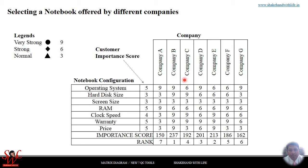In the same way, we calculate the importance score for every notebook offered by each company. Now we rank all the importance scores. Company B has rank 1, Company E is rank 2, Company D is rank 3. We can now prefer the notebook according to our calculations — the notebook of Company B is most suitable to buy. This is how we can solve the problem.